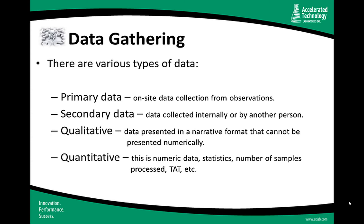In data gathering, there are several different types of data collected. Primary data is simply on-site observations made by the assessor — the key subject matter expert. Secondary data is data shared with this individual from the laboratory staff: observations, reports, or maybe an old needs assessment conducted by a different provider.